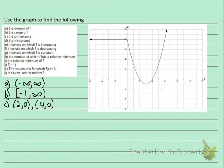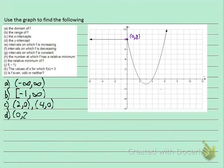Part D asks for the y-intercept — that's where your graph crosses the y-axis. Does this graph cross the y-axis? Yes, right here. The ordered pair of this point is 0 in the x-direction and 8 up in the y-direction. So the y-intercept is (0, 8).